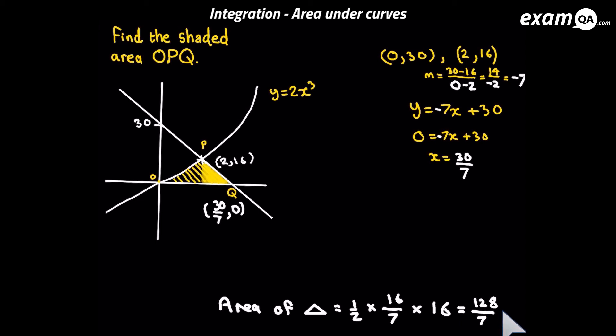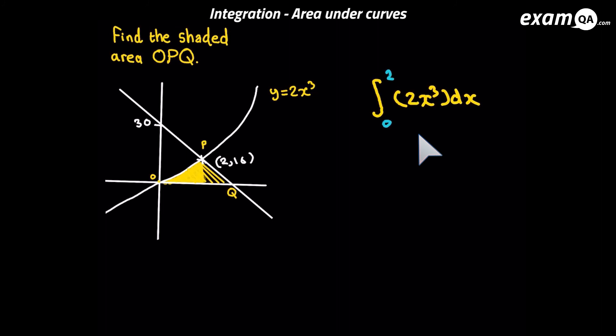Now we need to move on to work out the other bit, the area underneath the curve. Area underneath the curve bounded by the curve and the x-axis, you should know how to do it from the previous example. It's simply the integration of the curve with the limits 2 and 0, because that area we're trying to work out is between x values 2 and 0.